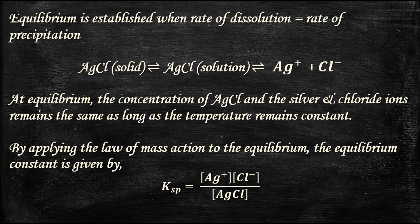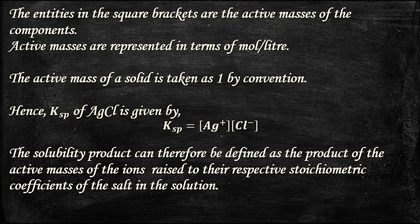At equilibrium, the concentration of AgCl and the silver and chloride ions remains the same as long as the temperature remains constant. By applying the law of mass action, the equilibrium constant is given by: Ksp = [Ag⁺][Cl⁻] / [AgCl]. The entities in square brackets are the concentration or active masses of the components, represented in moles per liter. Since the active mass of a solid is taken as one by convention, Ksp of AgCl = [Ag⁺][Cl⁻]. The solubility product is defined as the product of the active masses of the ions raised to their respective stoichiometric coefficients of the salt in solution.